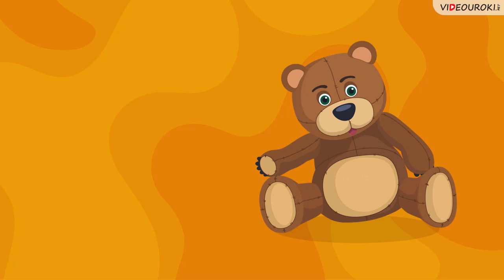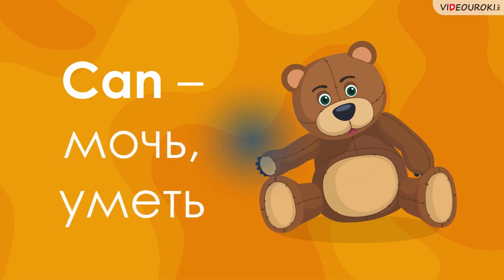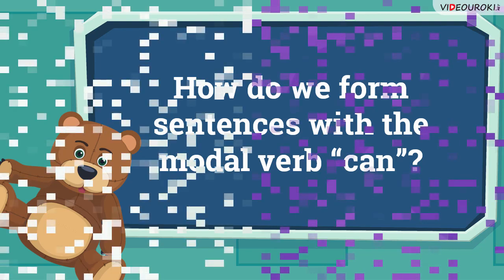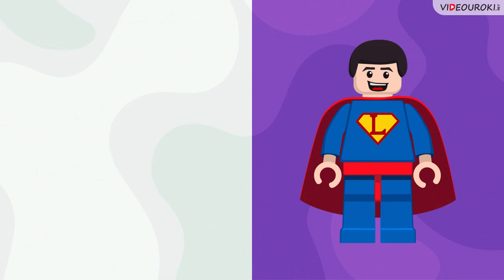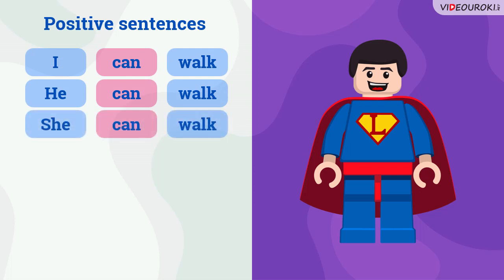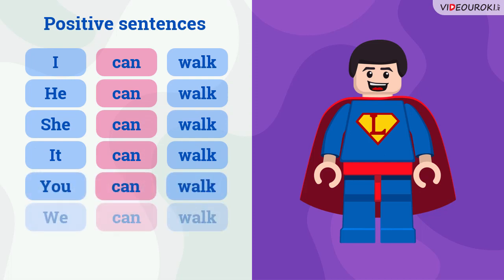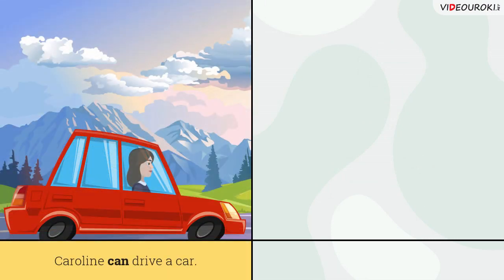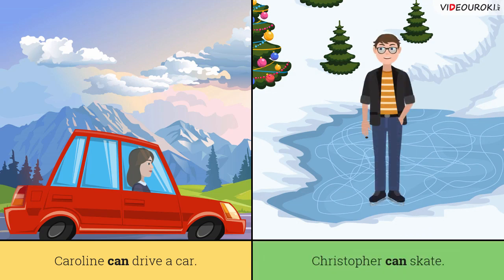Let's start. First we will revise the modal verb 'can.' It's translated as 'мочь, уметь.' To form positive sentences we say: I can walk, he can walk, she can walk, it can walk, you can walk, we can walk, they can walk. For example: Caroline can drive a car — Caroline умеет водить машину. Christopher can skate — Christopher умеет кататься на коньках.